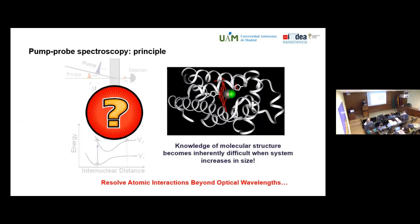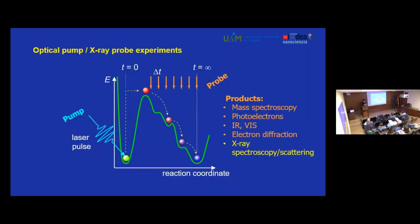The problem arises when the system increases in size. For small molecules — atomic and triatomic — as demonstrated by Ahmed Zewail's Nobel Prize in 1999 in femtochemistry, you can establish a direct relation between transition energies and internuclear distances. However, when the system grows in complexity, this becomes inherently difficult. Instead, we try to resolve atomic interactions beyond optical wavelengths and get direct access to atomic positions during the course of a chemical reaction. We replace the probe pulse: instead of optical light, we use an X-ray pulse. We trigger the reaction with a laser and then watch the evolution using X-rays.